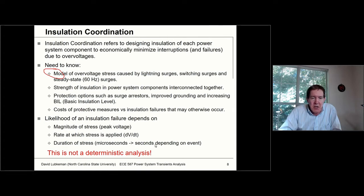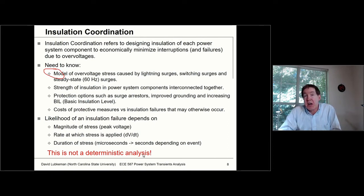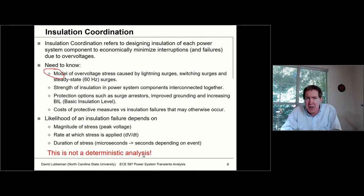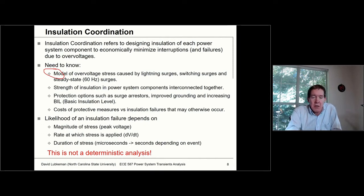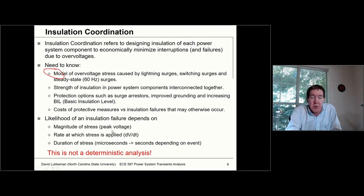We want to figure out how to use surge arrestors to protect key equipment, and this has to be done economically. We can spend a lot of money putting surge arrestors everywhere and using equipment with very high BIL ratings and never have anything fail — but that's going to be extremely expensive. We have to be cognizant of what the magnitude of the overvoltage stress will be, and we've been talking about peak voltage all semester.